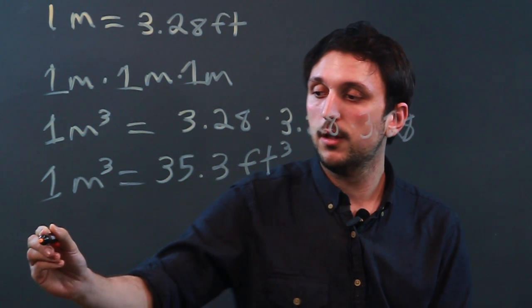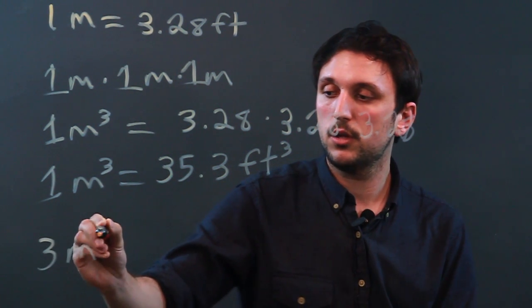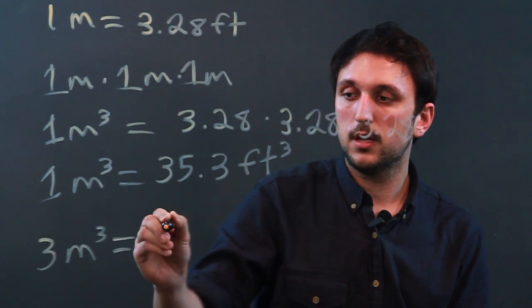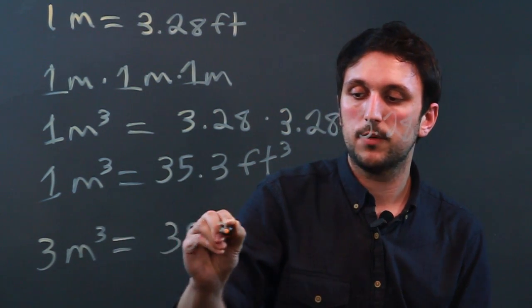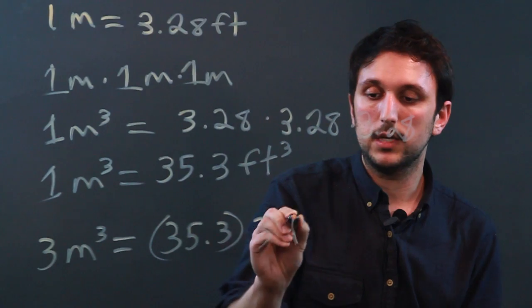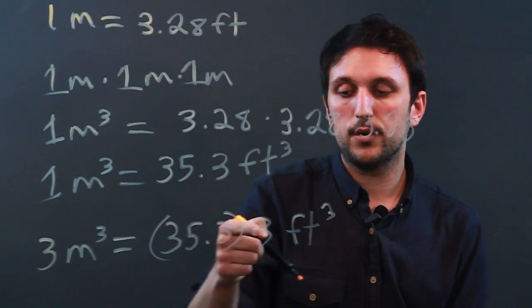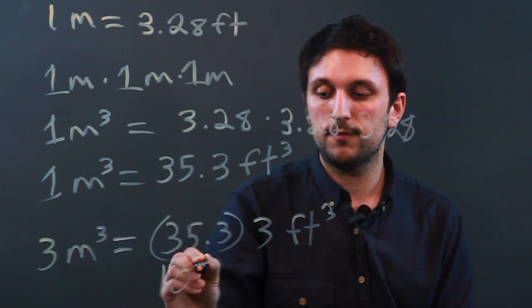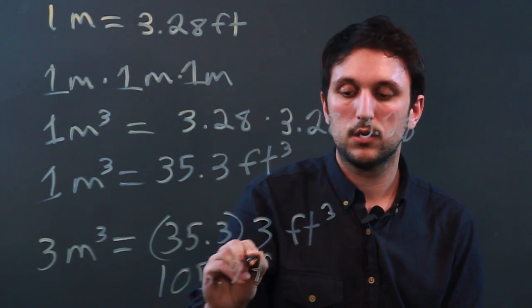So basically, if we said 3 meters cubed, it would be 35.3 times 3, which is 105.9 feet cubed.